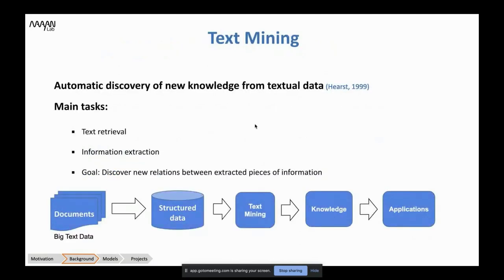When you want to analyze text, you will often hear the term 'text mining.' Text mining is the automatic discovery of new knowledge from textual data. The main tasks of text mining are text retrieval and information extraction, with the goal of discovering new relations between extracted pieces of information.